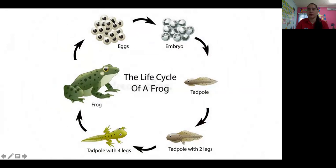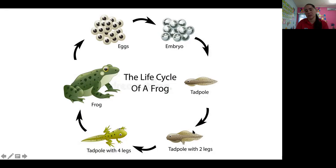The life cycle of a frog: first, the frog lays its eggs. Then it turns to an embryo. Afterwards, it hatches and turns into a tadpole. Then afterwards it gets two legs, then four legs, and then it becomes a frog. All of this cycle must happen in the water. I wonder how many of you have ever seen a tadpole or a baby frog in the water — it looks almost like a fish.